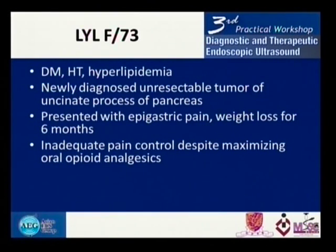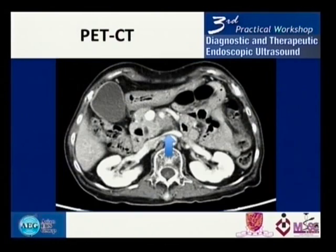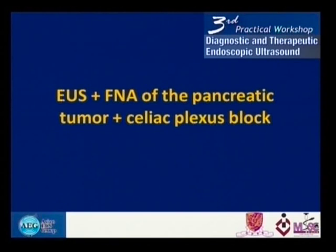The next patient is a 73-year-old lady with a background history of diabetes, hyperlipidemia, and newly diagnosed pancreatic uncinate process tumor. She has presented with epigastric pain, weight loss, and intractable pain uncontrolled on maximum opiates. This is the CT scan and she is booked for EUS FNA plus celiac plexus block.